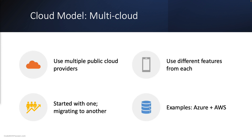Finally, the multi-cloud model allows organizations to use multiple public cloud providers, choosing specific features from each that best suits their needs. Organizations can use one provider initially and then migrate to another one later. An example of the multi-cloud model is using both Azure and AWS together.